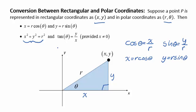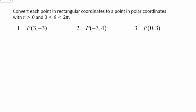Let's look at some examples. Let's convert each of the points in rectangular coordinates to a point in polar coordinates, with r greater than 0 and theta on the interval 0 to 2 pi. This first one, 3, negative 3. I imagine drawing that, and that would live in the fourth quadrant. It would be about right here, and it would live on a right triangle.